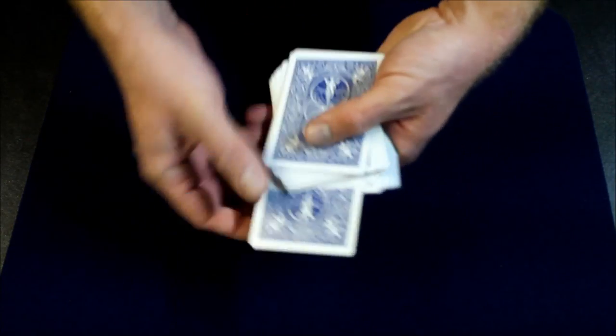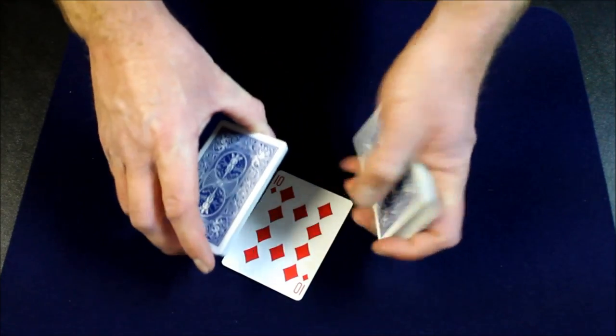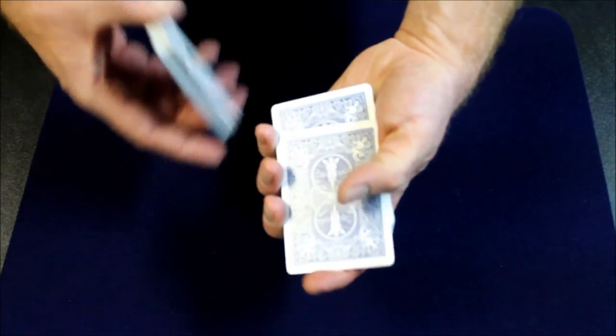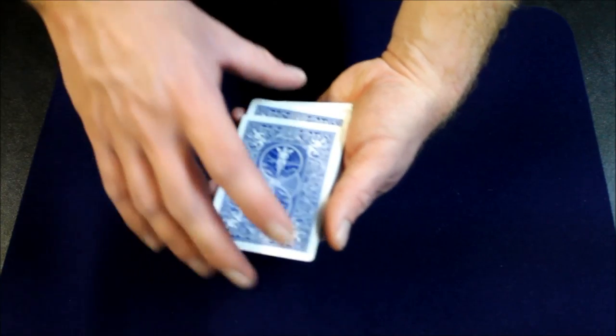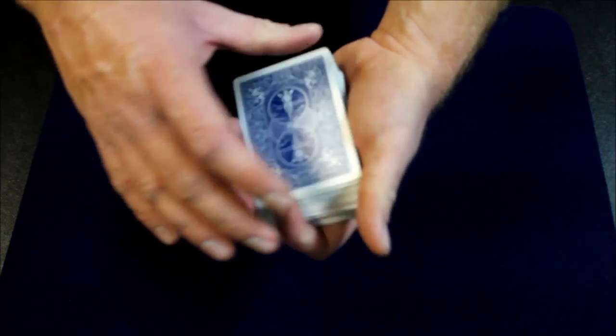You're gonna have a card selected. So when you have the card selected you're gonna do a swing cut. And you have the card put on top. And you're gonna drop the rest of the pack on. Because now what you've done is you've put the red card on top of the spectator's card.